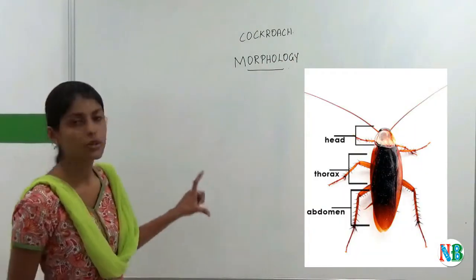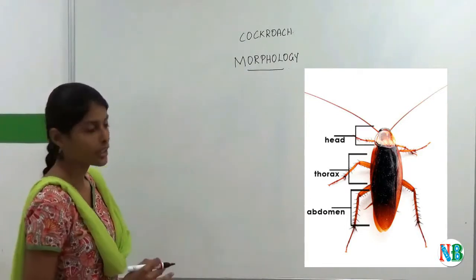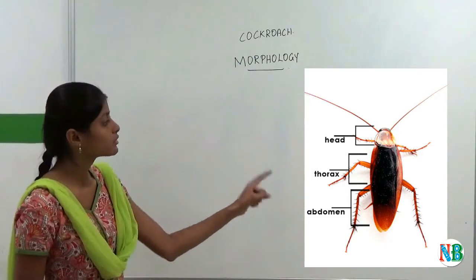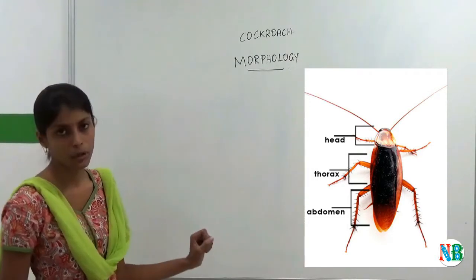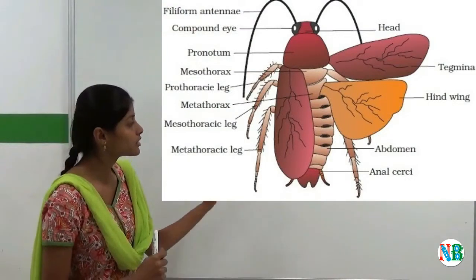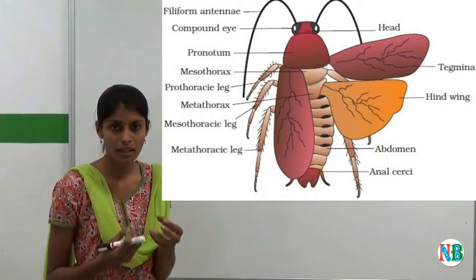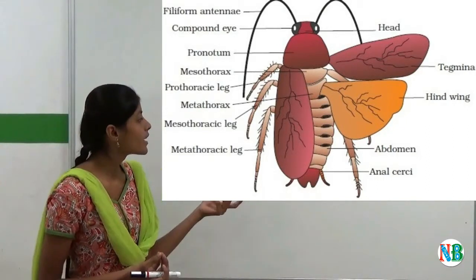So in this image, you can see the cockroach. And the cockroach's body is divided into three parts. One is head, and the next one is thorax, and the last one is abdomen. Here, the cockroach's body is segmented. Sometimes these segments become hard plate-like structures, and these are called sclerites.